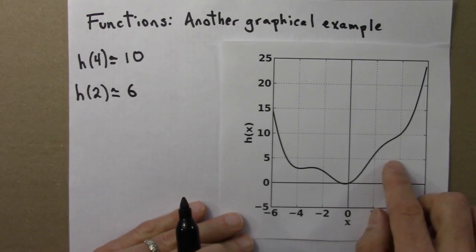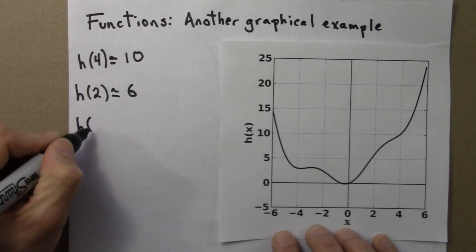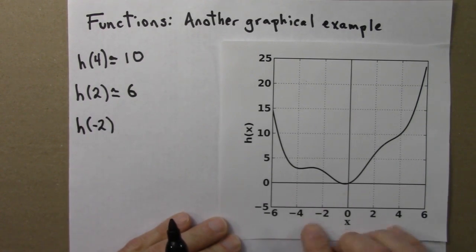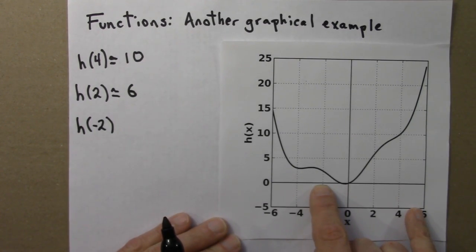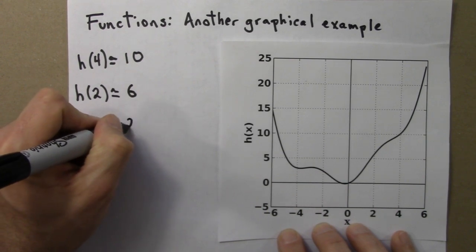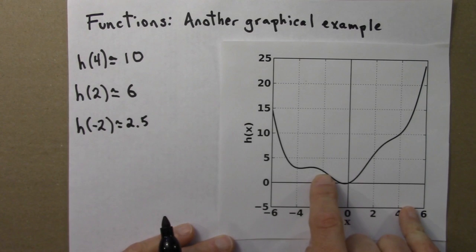Let's do one more. Maybe h(-2). So now -2 is my input. What's the function value? That's the height of the curve here. And I look and I'll say, that's about 2.5. About 2.5. Not exact, it's an approximation, but that's okay.